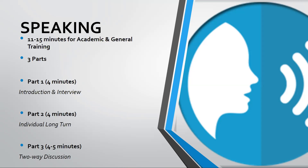The speaking subtest has approximately 11 to 15 minutes and is divided into three parts. Part one is the introduction and interview, lasting three to four minutes. The questions are based on the test-taker's personal information and general interests, such as your home, hobbies, or topics related to social context. Part two is the individual long turn, approximately four minutes: one minute to prepare and two minutes to talk.